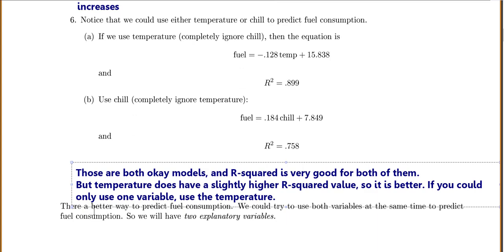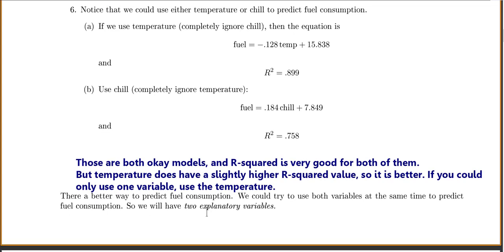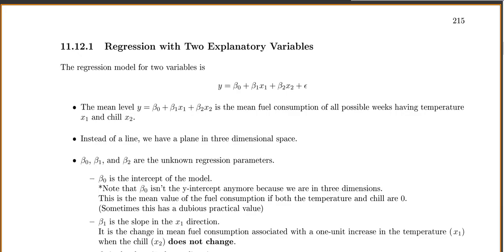But there's an even better way to do this than just using one variable. We could try to use both variables at the same time to predict our fuel consumption. So this time we'll have two explanatory variables. So let's talk about a regression model for two variables, if we have two x variables.